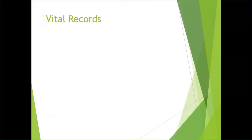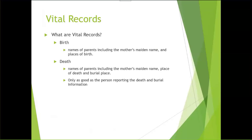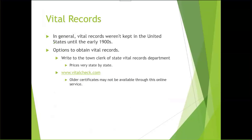Vital records are very important when doing genealogy — these are considered primary sources. What are vital records? They are your birth record, which lists the names of your parents, your parents' maiden name, and your place of birth. Death records, which include your mother's maiden name, place of birth, and the place of burial of the deceased. However, they are only as good as the person reporting the information. Marriage certificates list the names of individuals being married and their parents' names. Divorce records may list minor children. In general, vital records weren't kept in the United States until the early 1900s, and it does vary by state, so you will have to do that research for your specific state.